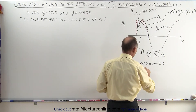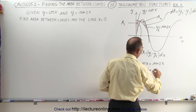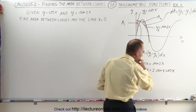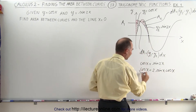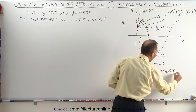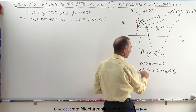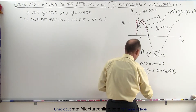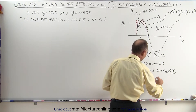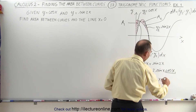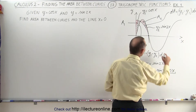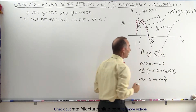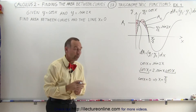We rewrite this as cosine of x equals 2 times sine of x times cosine of x. Notice we have cosine of x equals something times cosine of x. If cosine of x equals zero, then the left side equals the right side, so one option is cosine of x equals zero, which implies x equals 90 degrees or pi over 2. That's the point where x equals pi over 2 gives the same y value for both functions.